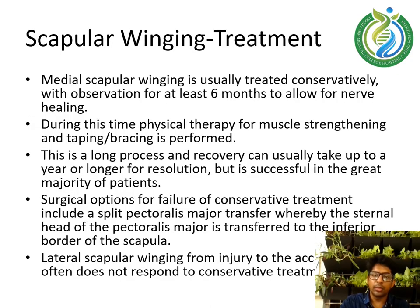Scapular winging treatment. Medial scapular winging is usually treated conservatively with observation for at least 6 months to allow for nerve healing. During this time, physical therapy for muscle strengthening along with taping or bracing is performed. Recovery can usually take up to a year or longer but is successful in the great majority of patients. Surgical options for failure of conservative treatment include a split pectoralis major transfer, whereby the sternal head of the pectoralis major is transferred to the inferior border of the scapula. Lateral scapular winging from injury to the axillary nerve often does not respond to conservative treatment.